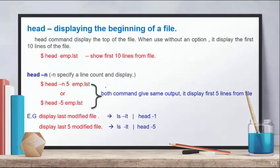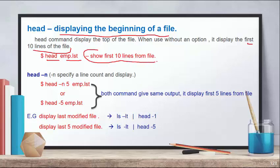After the PR command, next is the HEAD command. The head command displays the beginning of a file — it displays the top lines of a file. When you use the head command without any option, it will display by default the first 10 lines of the file. For example: head emp.lst will show the first 10 lines from that file.